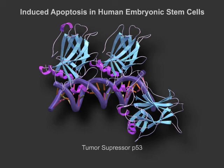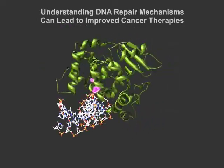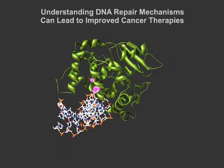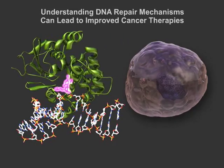Understanding the p53 signaling pathway in apoptosis and in the repair pathway could provide greater insight into how our cells deal with DNA damage. Using novel ways to visualize DNA repair in action allows us to study how our cells deal with DNA damage. Regardless of whether at a molecular or cellular level, a better understanding of how DNA damage is controlled and fixed in our bodies can be important for developing improved cancer therapies.